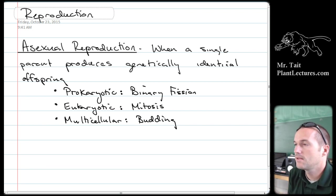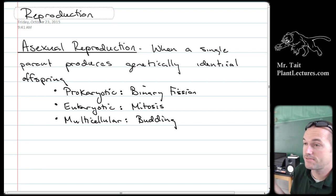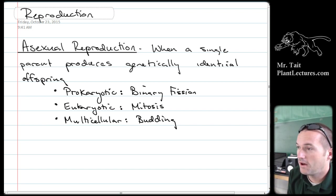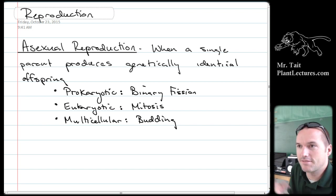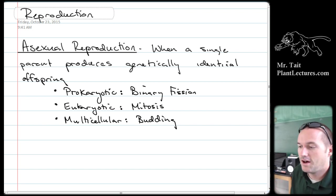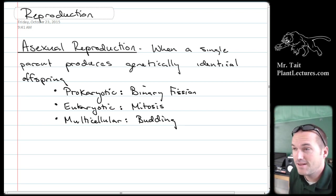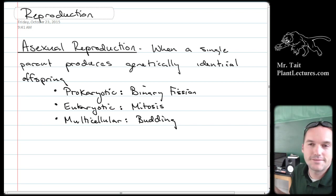Thousand-figure bananas taste just like Cavendish bananas. There are also strains that taste more like apples with a little crunch to them. Plantains are in the same genus as bananas. But the key point here is that asexual reproduction is generally disadvantageous because all the organisms will be genetically identical and susceptible to the same threats.